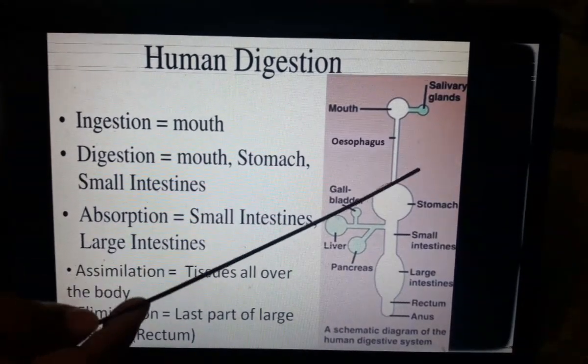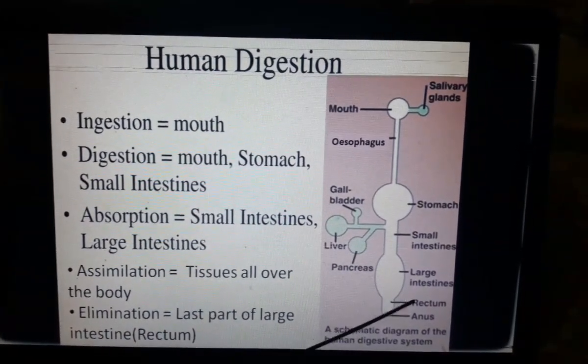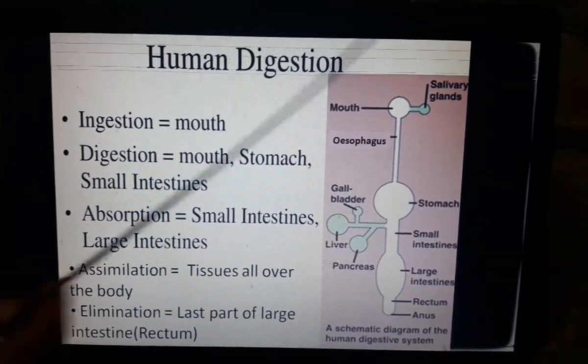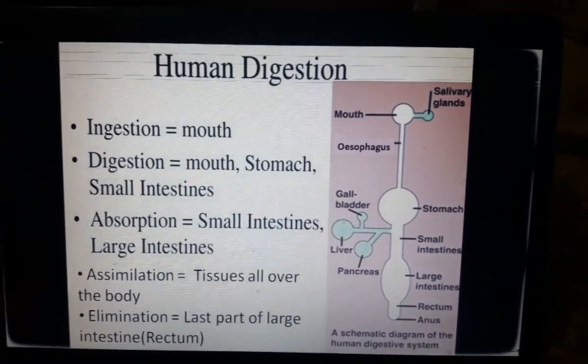Mouth, esophagus, stomach, small intestine, large intestine, rectum and anus, with some accessory glands: salivary glands, gallbladder, liver, and pancreas.